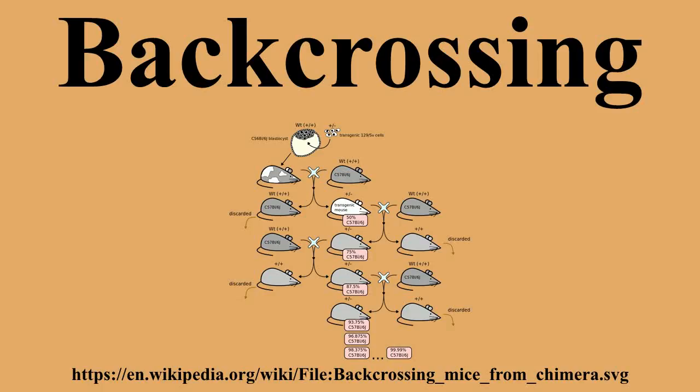Regarding natural back-crossings, York Radiate groundsel is a naturally occurring hybrid species of Oxford ragwort and common groundsel. It is thought to have arisen from a back-crossing of the F1 hybrid with S. vulgaris.